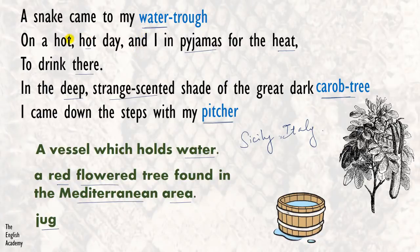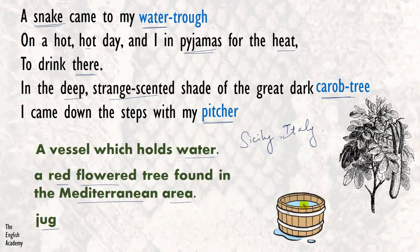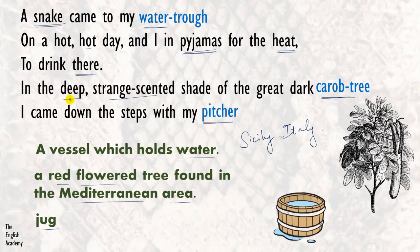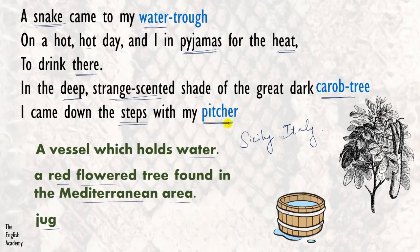In this stanza, the poet is introducing a snake. He says a snake visited the water trough in the poet's garden and the poet was also there, wearing his casual loungewear because it was very hot — a hot, hot day. Both of them were at the water trough to drink water. Then he says, 'In the deep, strange-scented shade of the great, dark carob tree, I came down the steps with my pitcher.' He walked towards the water trough, descended the steps, holding a jug to fill with water.